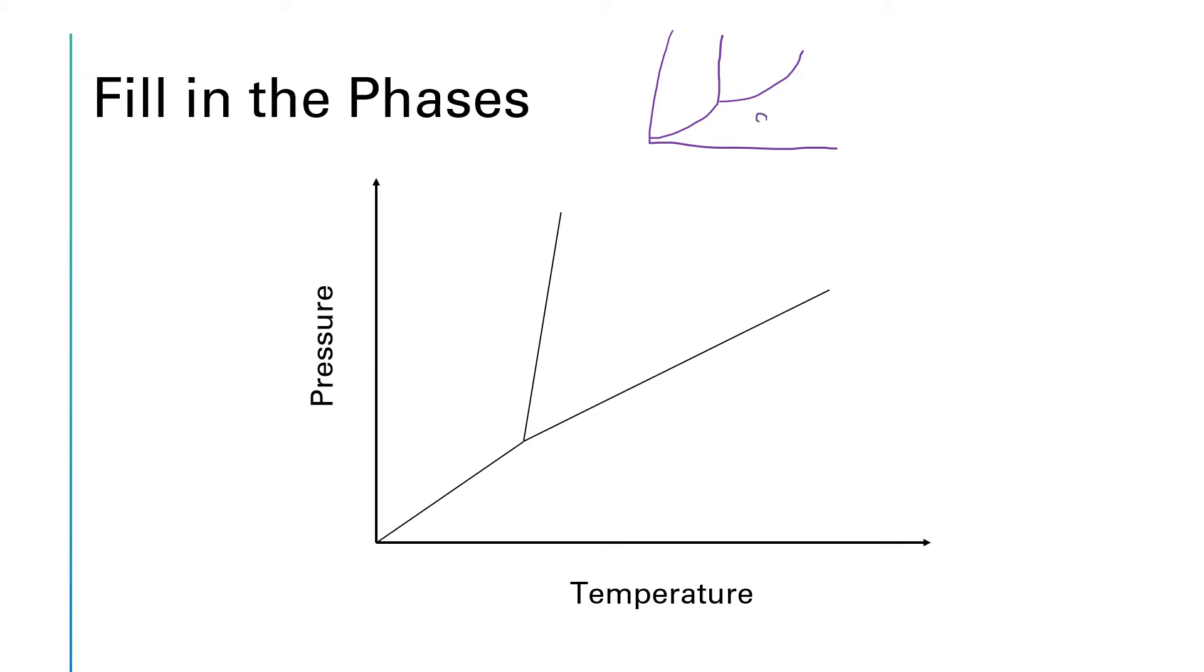And guess what? The gas is out here in this region. Then that means that the two cheeks must be solid and liquid. And the horizontal axis is temperature. So the cooler temperatures are going to be the solid phase and the warmer temperatures will be the liquid phase.